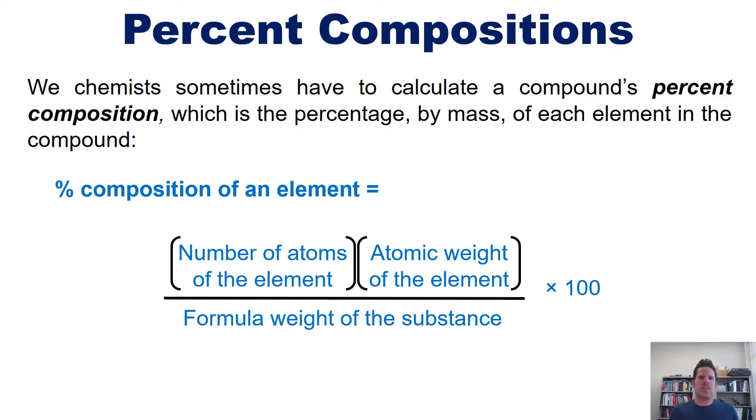Now this might seem baffling but think about it this way. Let's say you got a 45 out of 50 on a quiz or something. How would you determine what percent you got on that quiz score wise? You take 45 divided by 50 and then times it by 100. It's the same thing here.